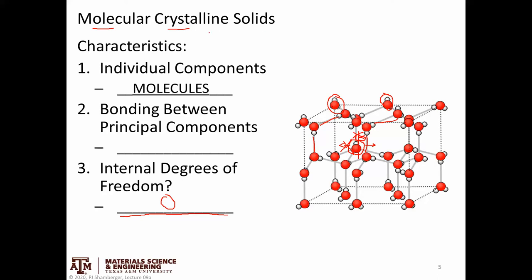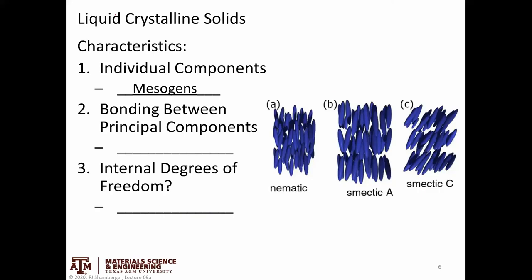This is a crystalline solid made of molecules as opposed to atoms — we'd still use the same terms, unit cells and lattice translation vectors, to describe it. Now, liquid crystals are different. The individual components are still molecules, but we call them mesogens. Each of these long ellipsoids represents a molecule, and because it's part of a liquid crystal, we call it a mesogen — that's the basic building block of a liquid crystal. The bonding between mesogens is relatively weak secondary bonding.